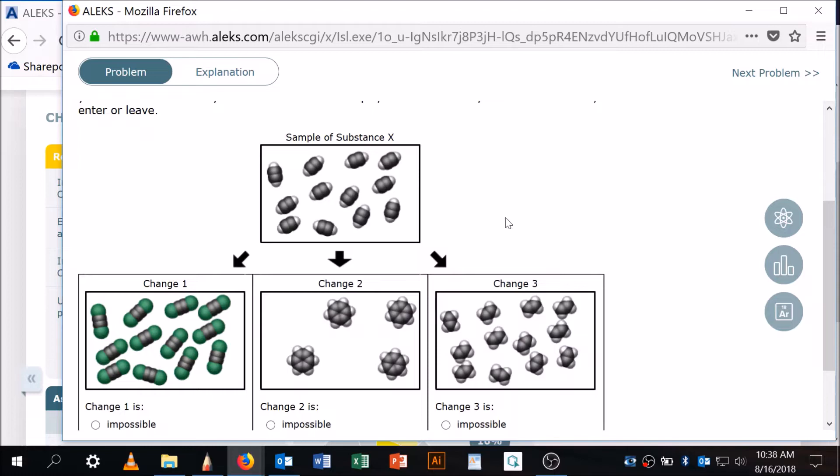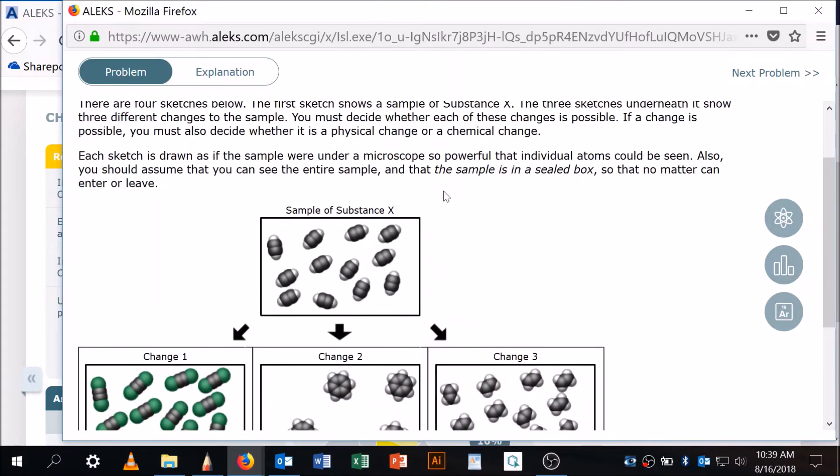It might be a change in state, like from a solid to a liquid. It might be a change in temperature. Change in state of some kind, all right? Those are physical changes. Chemical is when the partners change. All right, so now that I know that, let's look here.